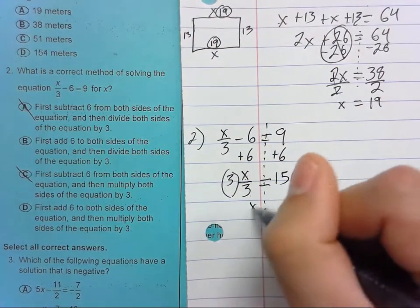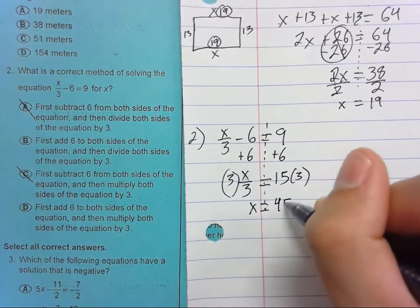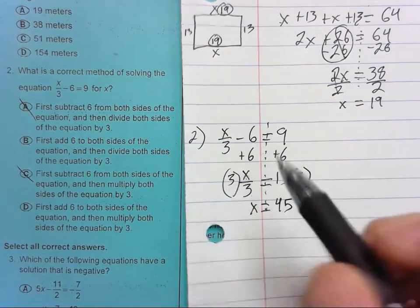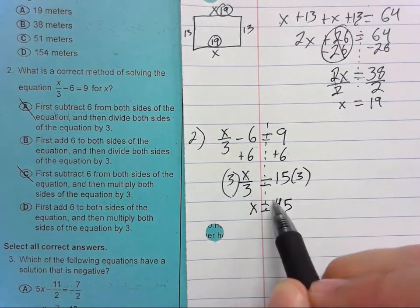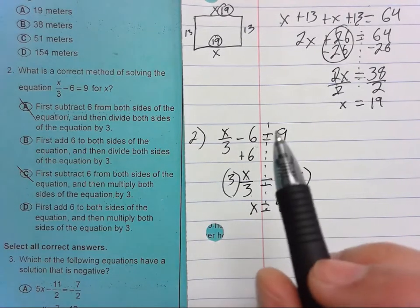Again, we don't need to find the answer. It is 45. But we add 6 and then we multiply by 3. So the answer to 2 is D.